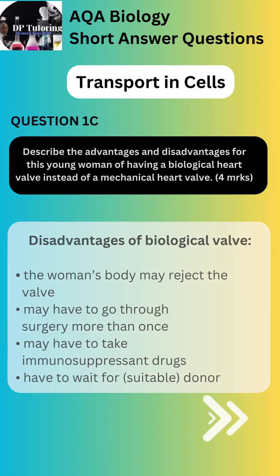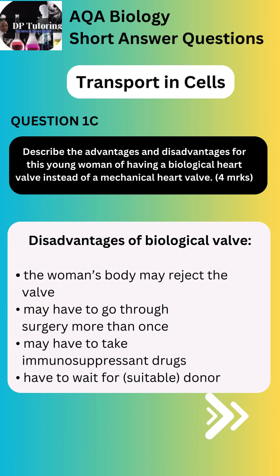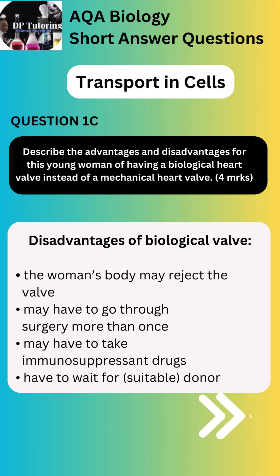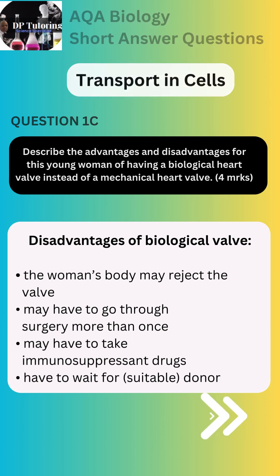Disadvantages of the biological valve: 1. The woman's body may reject the valve. 2. The woman may have to go through surgery more than once. 3. The woman may have to take immunosuppressant drugs. 4. The woman may have to wait for a suitable donor. Pause the video and ensure that you fully understand the question before you continue.